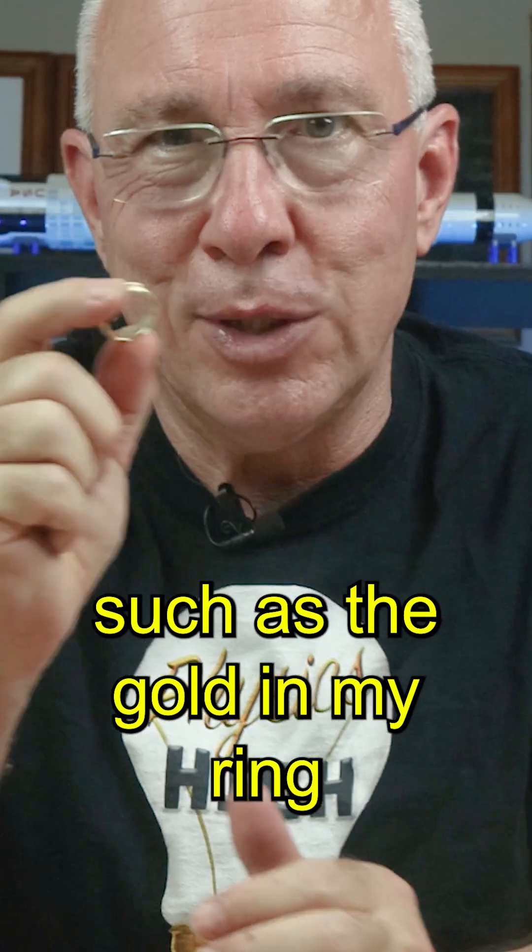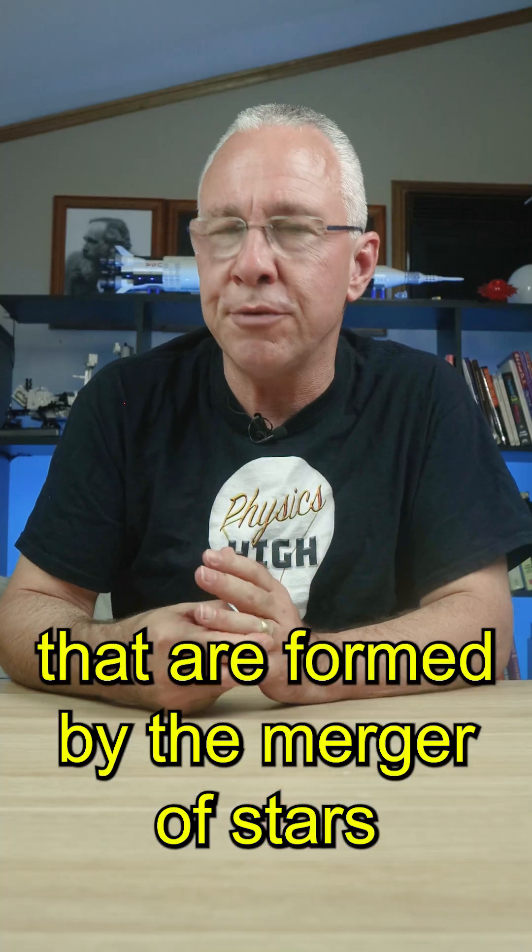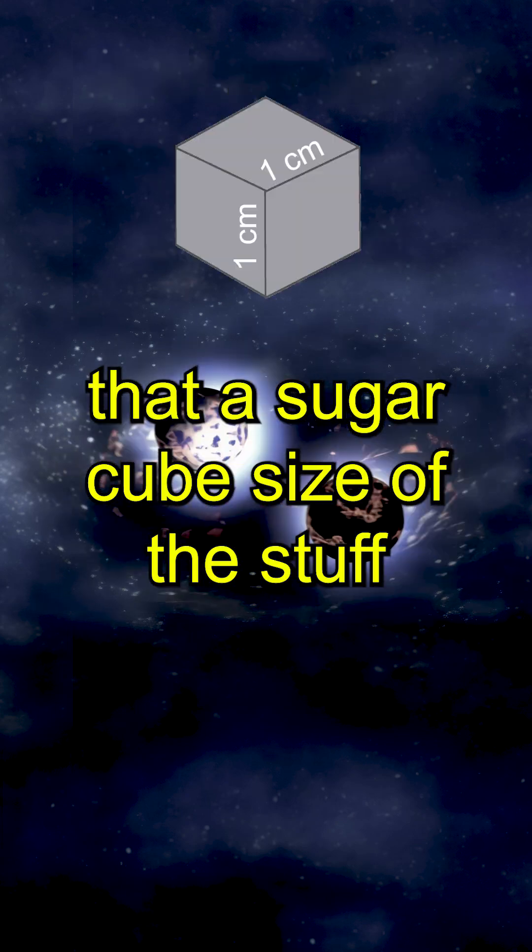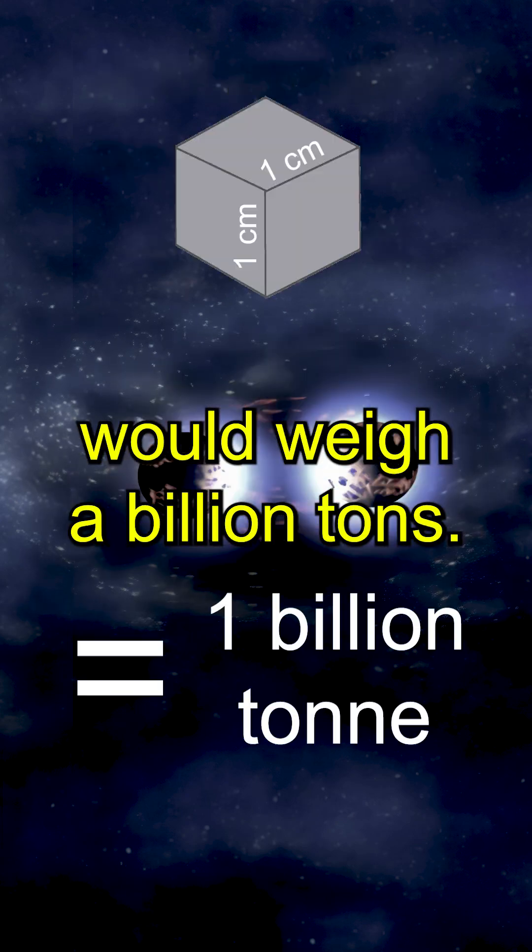And then there's some elements, such as the gold in my ring, that are formed by the merger of stars called neutron stars, remnants of supernovas so dense that a sugar cube size of the stuff would weigh a billion tons.